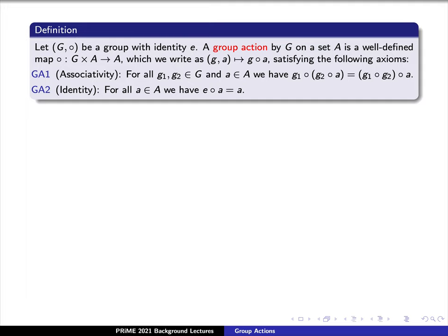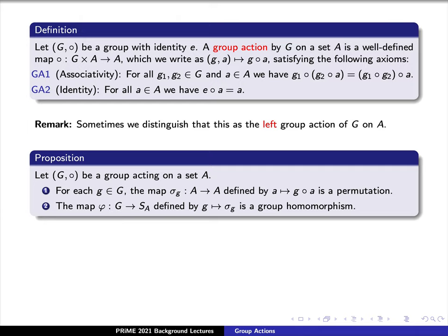Sometimes we'll say that this is a left group action of capital G on capital A. We have the following main result. Say that G along with a binary operation circle is a group acting on a set A. For each element lowercase g in capital G, the map sigma sub g, which sends A to itself, defined by a going to g circle a, is an example of a permutation.